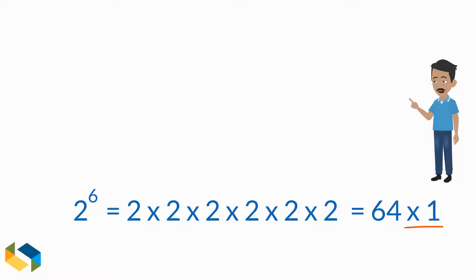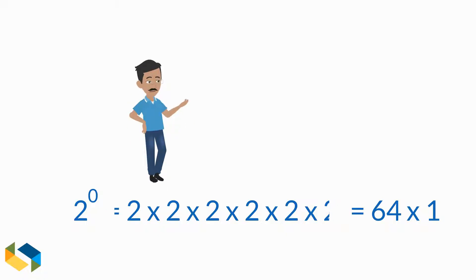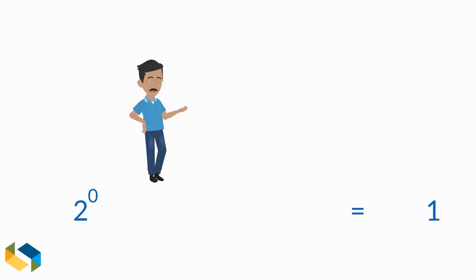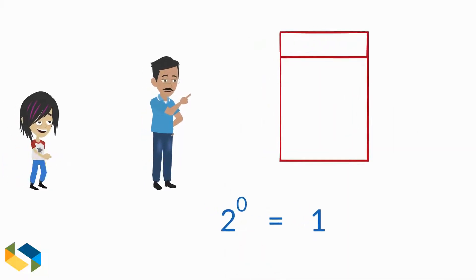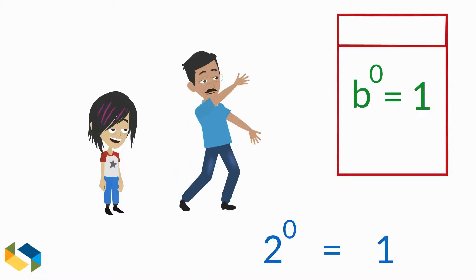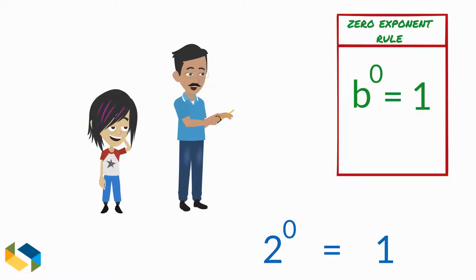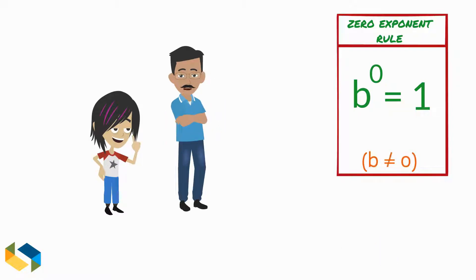Now, only to describe one of the many rules of exponents — let's say we replace the exponent six with a zero. This means there is no base to multiply by itself; the answer as a result is one. So when you take any variable with an exponent of zero, you get one as a result. This is called the zero exponent rule. Remember, for every exponent rule the base cannot be zero.